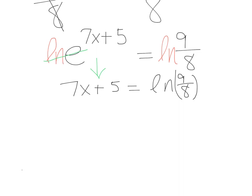So what I'm going to do now is subtract 5. That cancels, and then my last step here is to divide by 7.